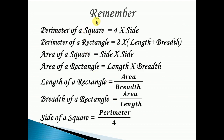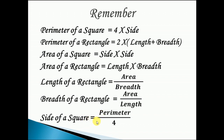Children, we have to learn the formulas. Remember the formulas: perimeter of a square equals 4 into side; perimeter of a rectangle equals 2 into length plus breadth; area of a square equals side into side; area of a rectangle equals length into breadth; length of a rectangle equals area divided by breadth; breadth of a rectangle equals area divided by length; side of a square equals perimeter divided by 4. Children, you have to learn all the formulas. Thank you, children.